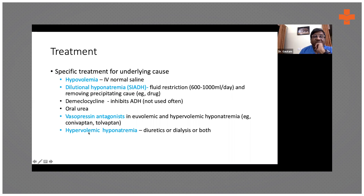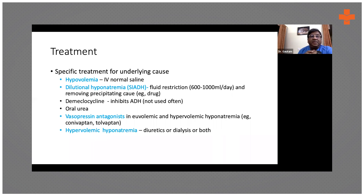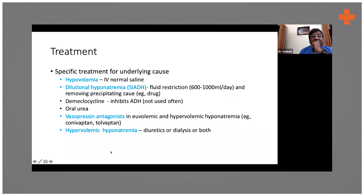In patients with CHF, you cannot give saline, and avoid 3% saline as well unless they're having seizures. In hypervolemic hyponatremia, the problem is retention of both sodium and water, so you would use diuretics like furosemide, and you can also use Tolvaptan. Very rarely, if those don't work, the patient may have to go for dialysis.